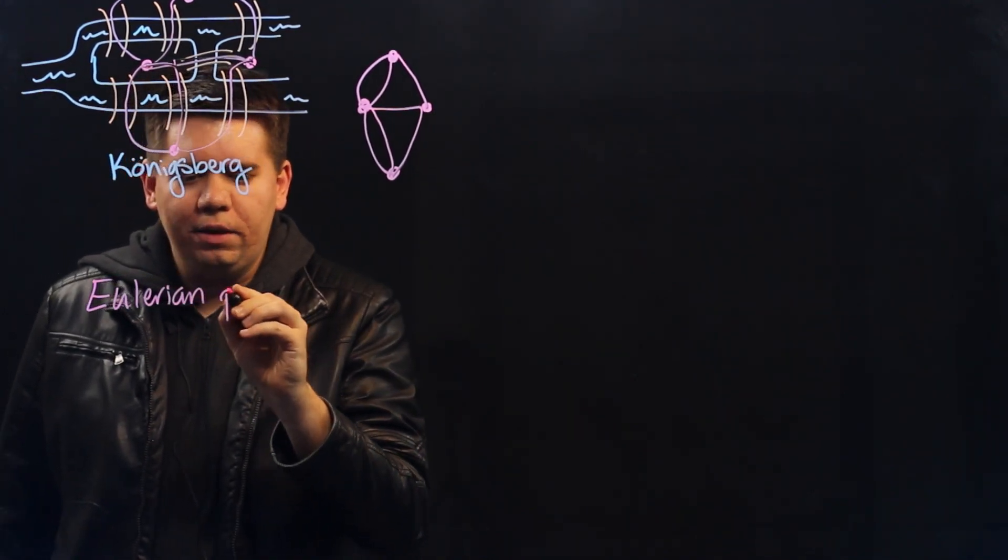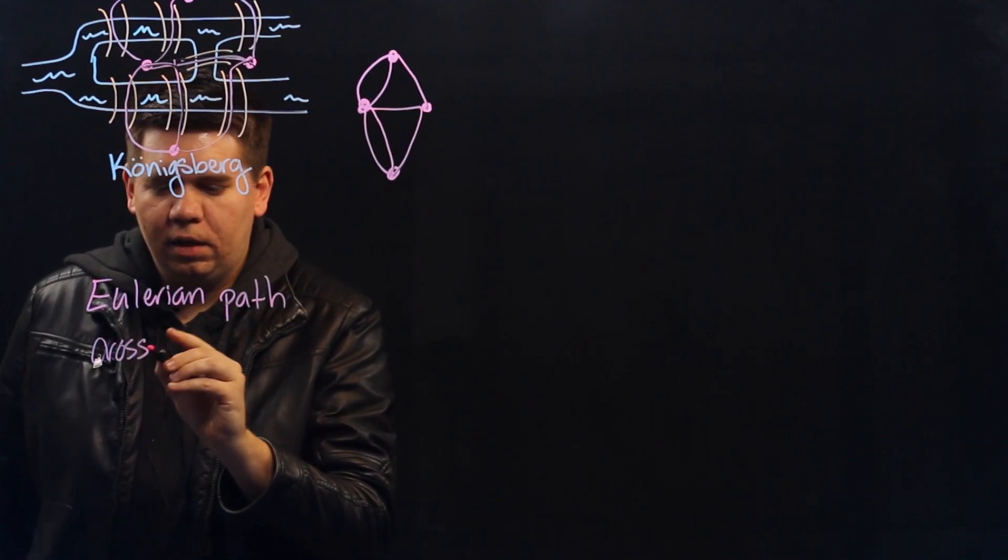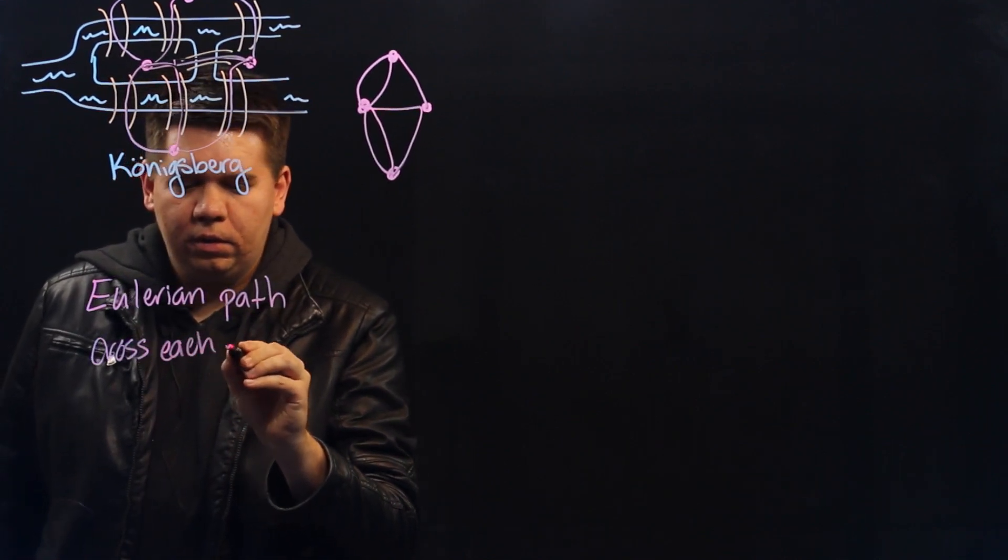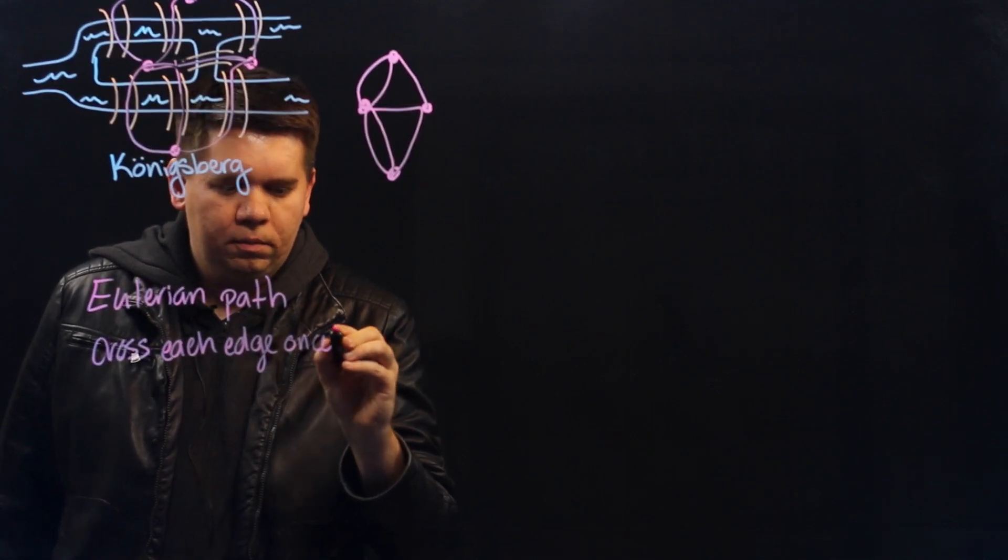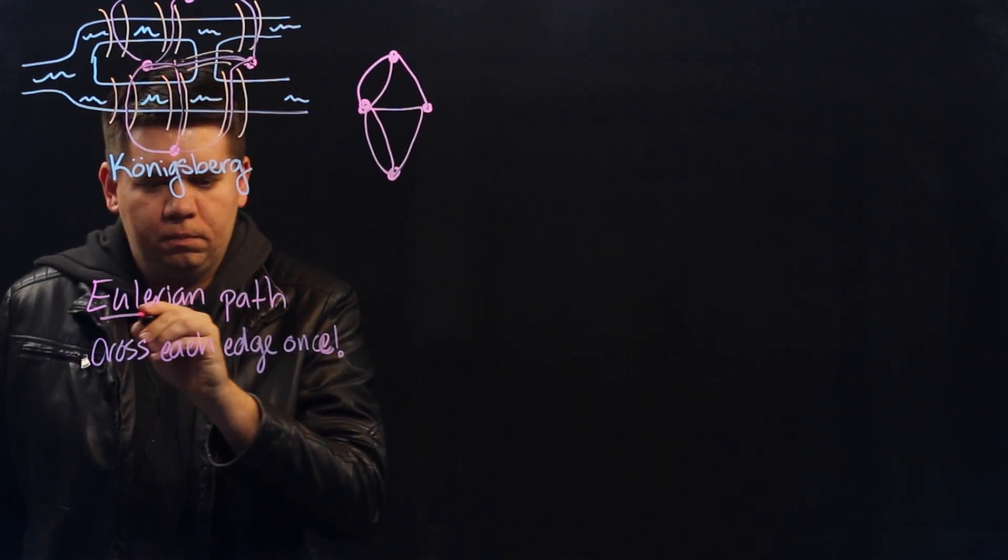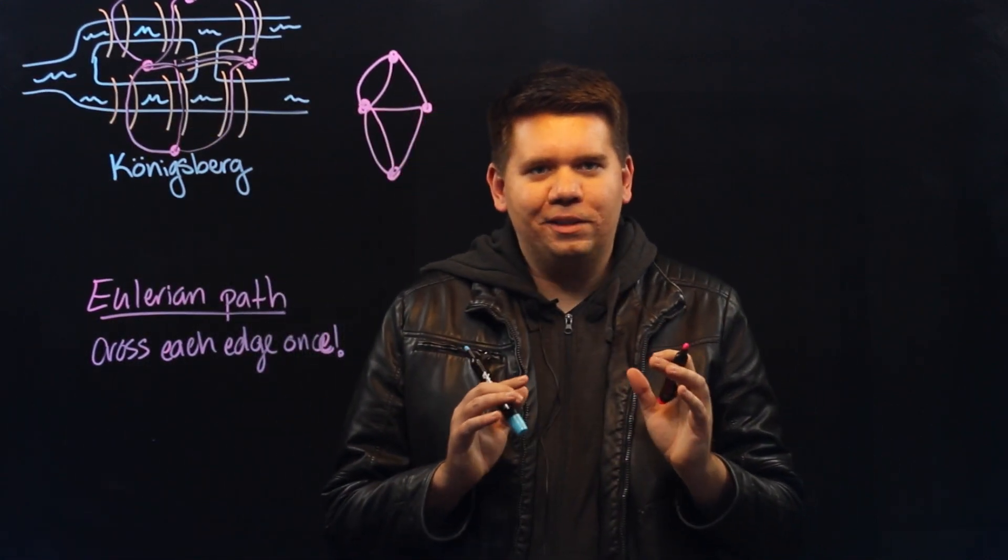An Eulerian path will cross each edge once. What will happen in such a path?